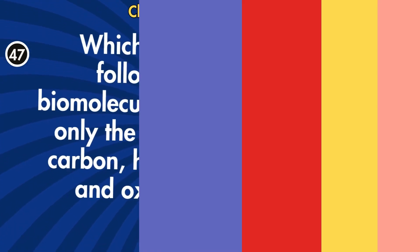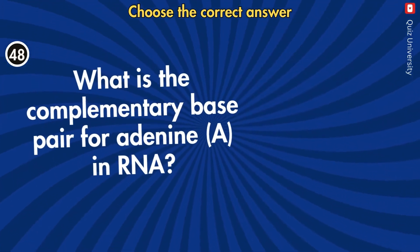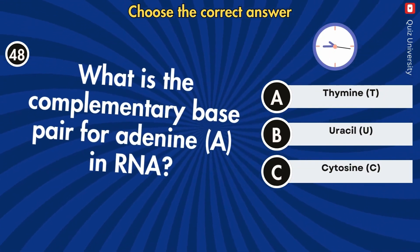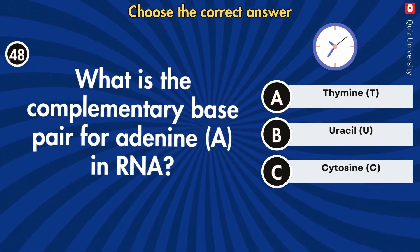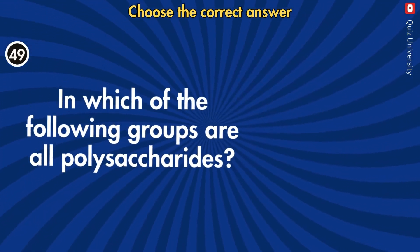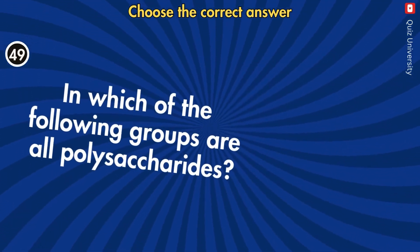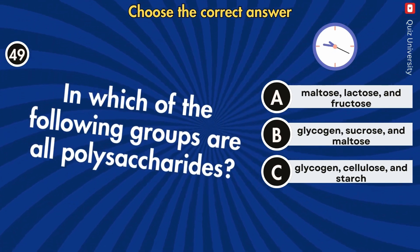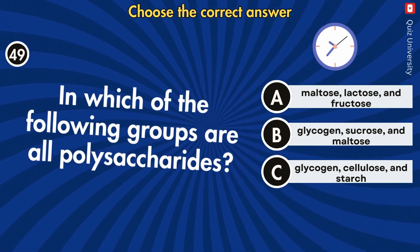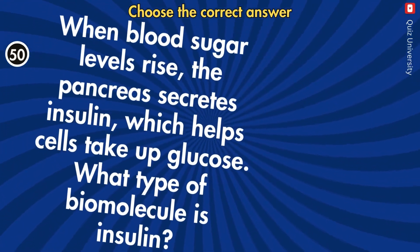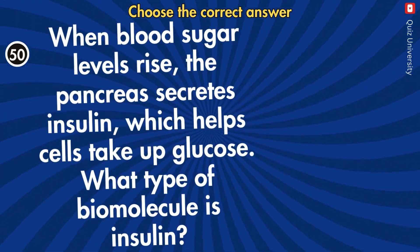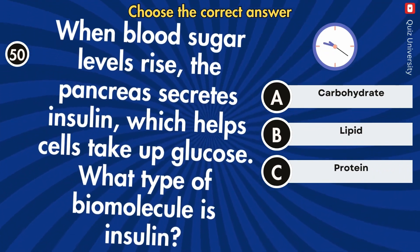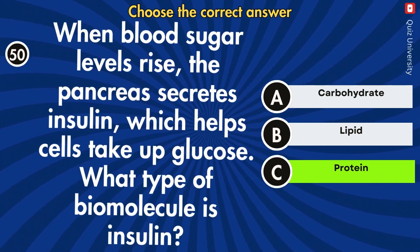Which of the following biomolecules contain only the elements carbon, hydrogen, and oxygen? What is the complementary base pair for adenine A in RNA? In which of the following groups are all polysaccharides? When blood sugar levels rise, the pancreas secretes insulin which helps cells take up glucose. What type of biomolecule is insulin?